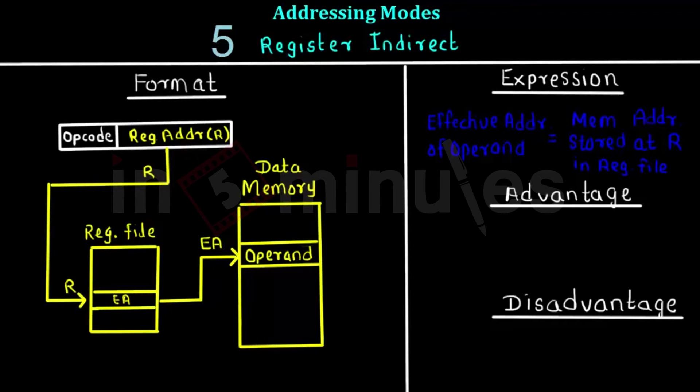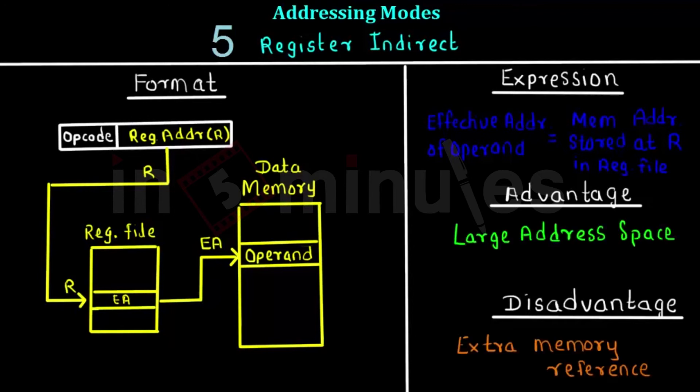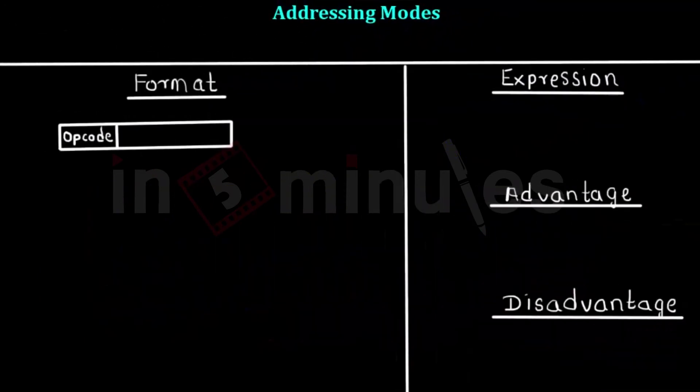The advantage of this mode is that a large address space is present. The disadvantage is that there is an extra memory reference — both the register file and data memory are accessed — which is the disadvantage of this addressing mode.